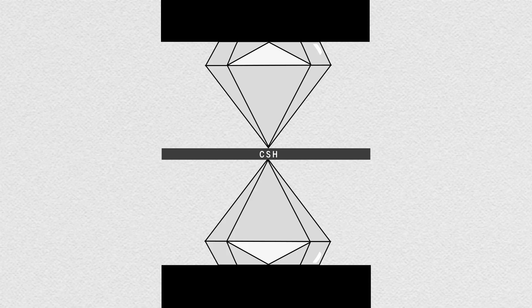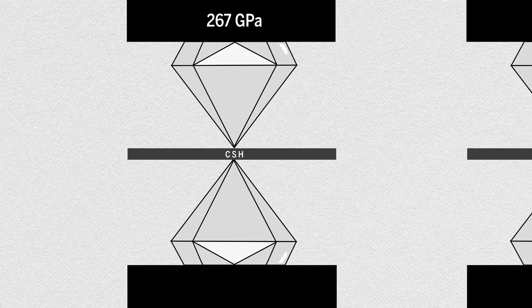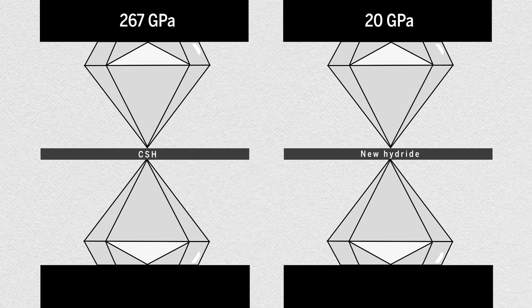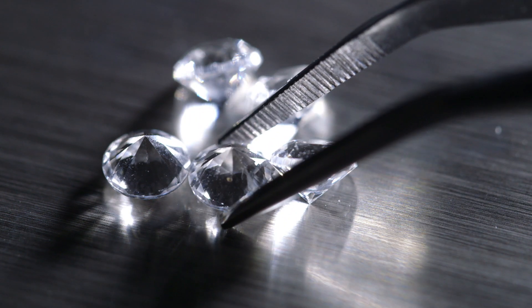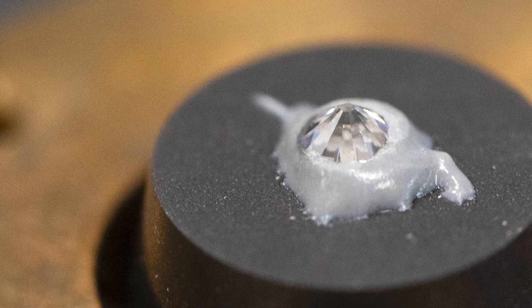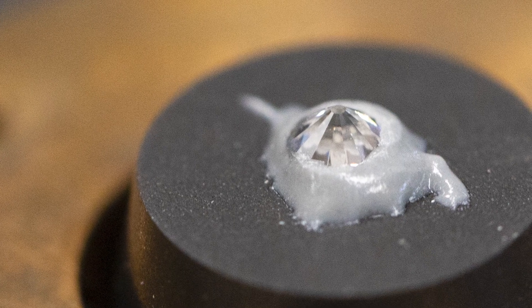While researchers are still working to replicate the 2020 finding, the group behind the CSH discovery has already teased results of a hydride that could function at way lower pressures. Even lower pressures, and diamonds won't have to be sacrificed to create hydride superconductors in the future.